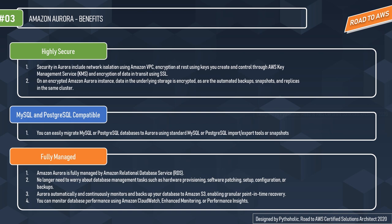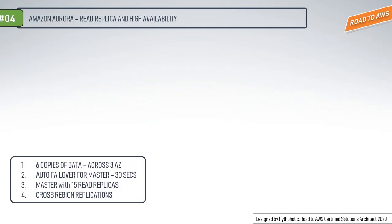Let's check how Aurora actually works — this is very important for the exam as well. For high availability, we must ensure our Aurora database is set up across multiple availability zones. Amazon Aurora is designed to offer greater than 99.99% availability, replicating six copies of your data across three availability zones and backing up your data continuously to Amazon S3.